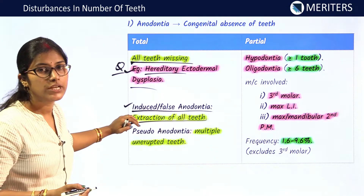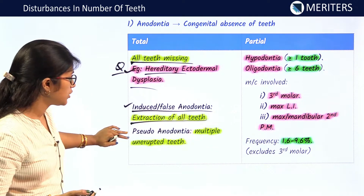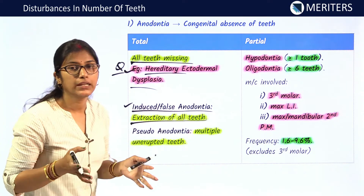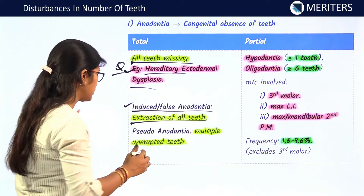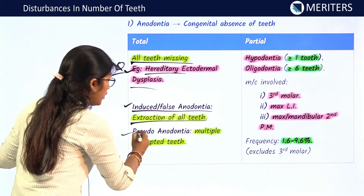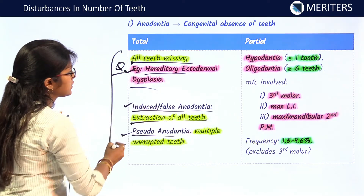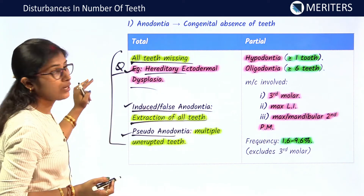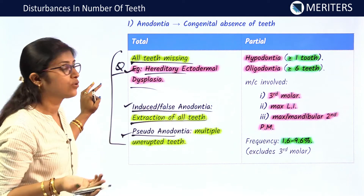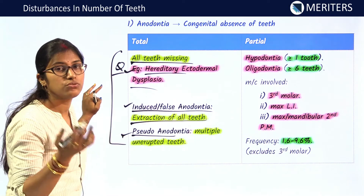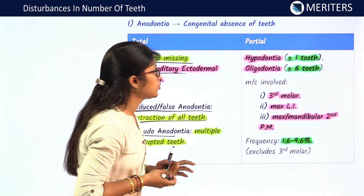Pseudo anodontia is when multiple unerupted teeth are present in the oral cavity. You should be familiar with all these terms — what is induced anodontia and what is pseudo anodontia. Now we'll see partial anodontia.